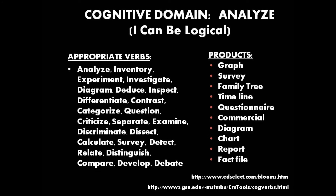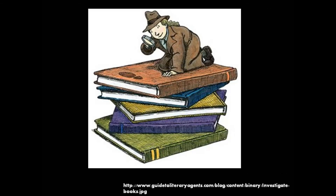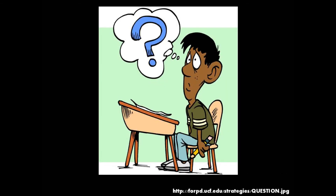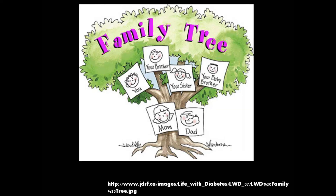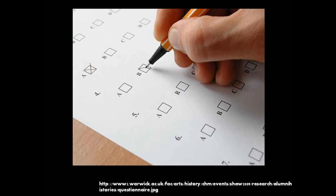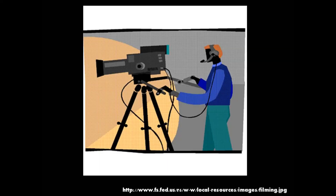The fourth subgroup is analyse, or 'I can be logical.' This is the ability to break the content being studied into simpler parts, notice the relationships between them, and recognise organisational principles. Some verbs could be deduce, question, and discriminate. With this subgroup, some products could be making a family tree, conducting and analysing a questionnaire, or making a commercial.